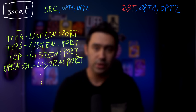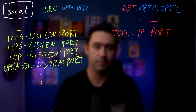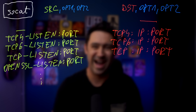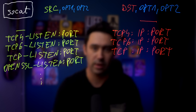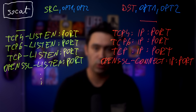On the destination, you can specify dash for standard output, TCP4 to connect to a TCP IPv4 endpoint, TCP6 for an IPv6 endpoint, TCP for either IPv4 or IPv6, OpenSSL-connect to connect to a TLS endpoint, and many others.